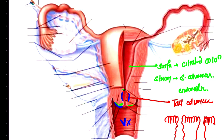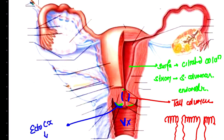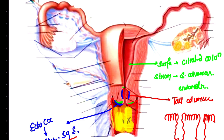The ectocervix does not consist of columnar epithelium. It consists of stratified squamous epithelium. Not only the ectocervix, but the vagina also consists of stratified squamous epithelium. Since stratified squamous epithelium plays no role in secretion, all the secretion in the vagina and cervix is because of the tall columnar cells within the endocervix.